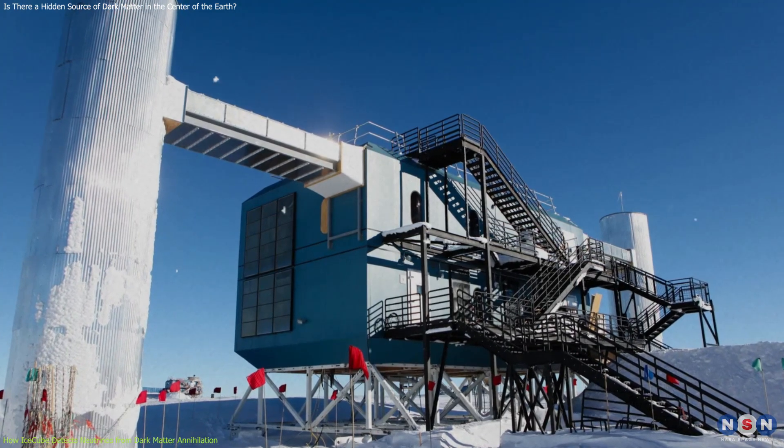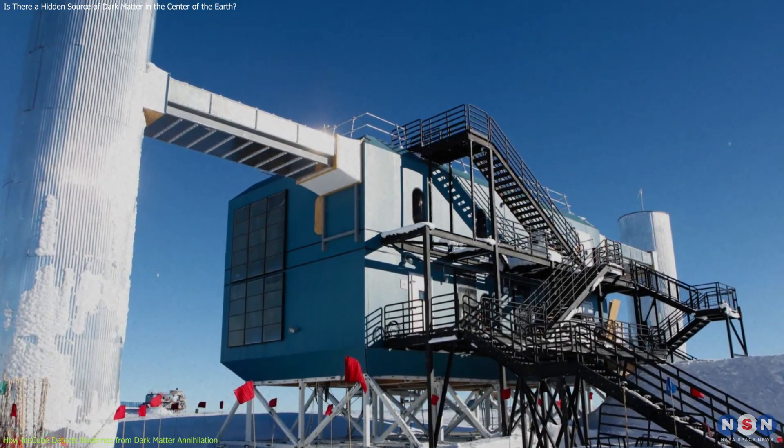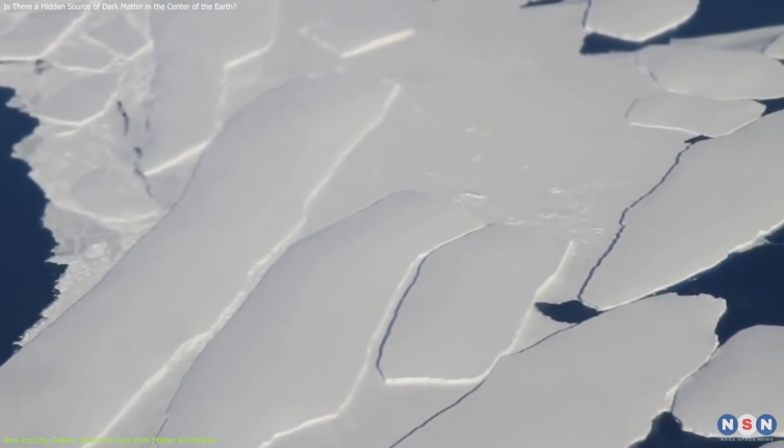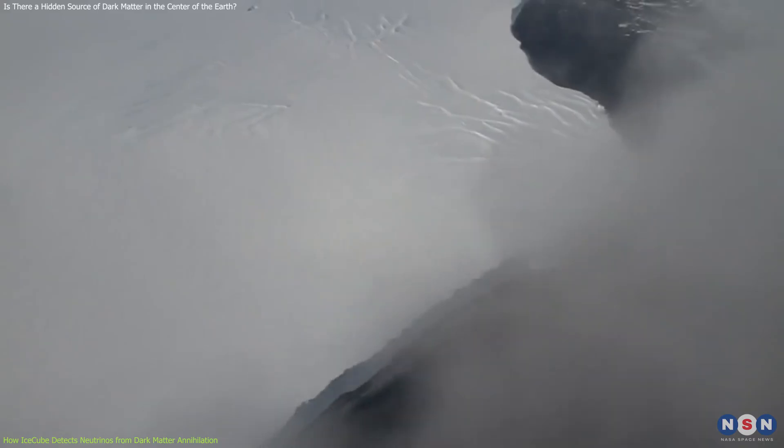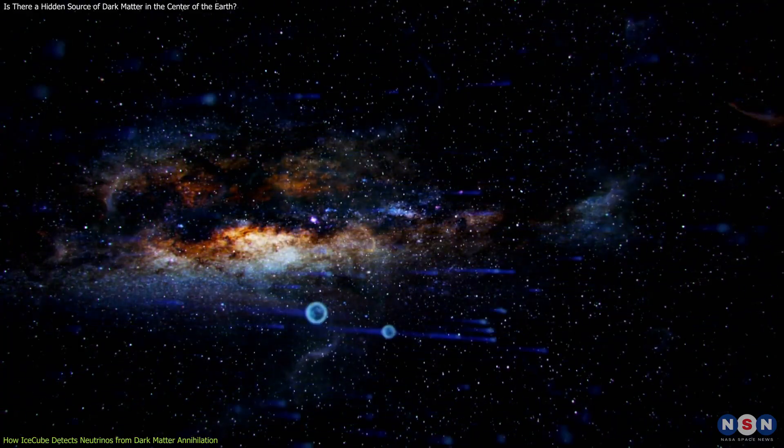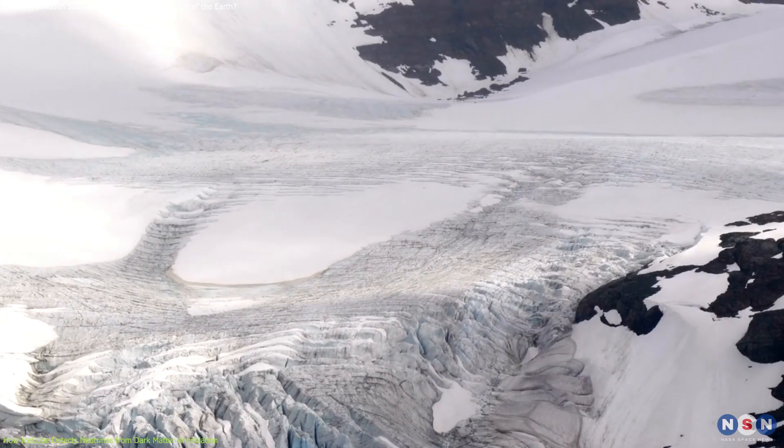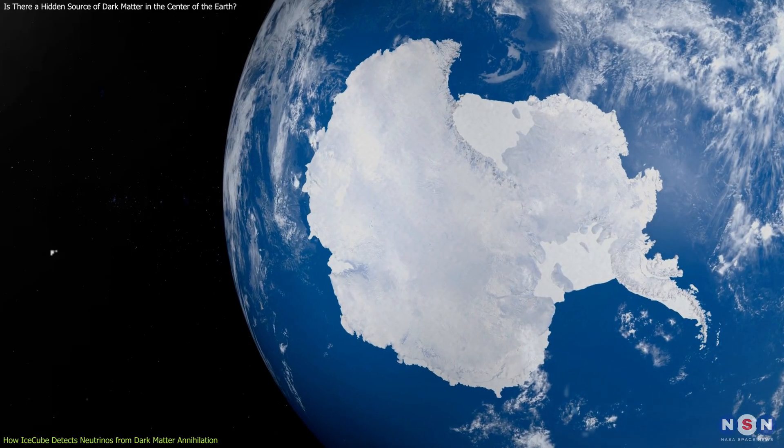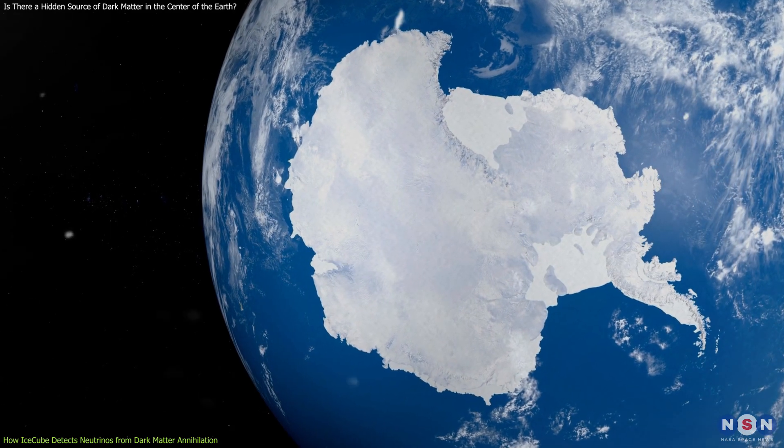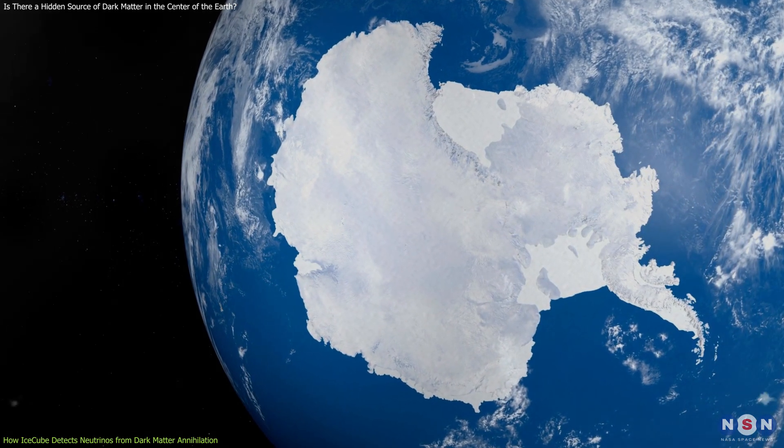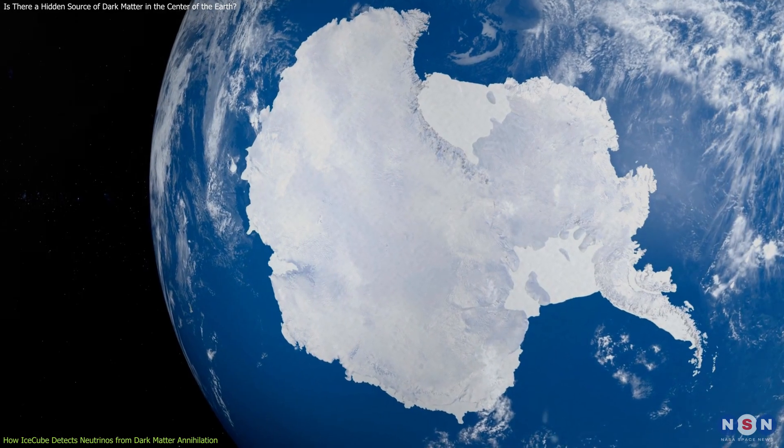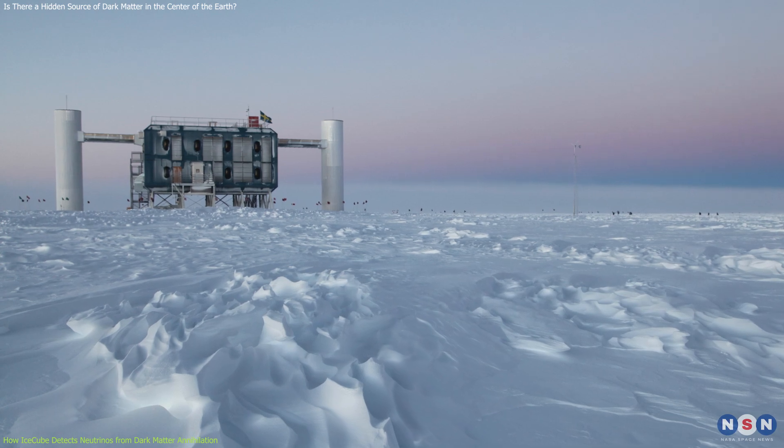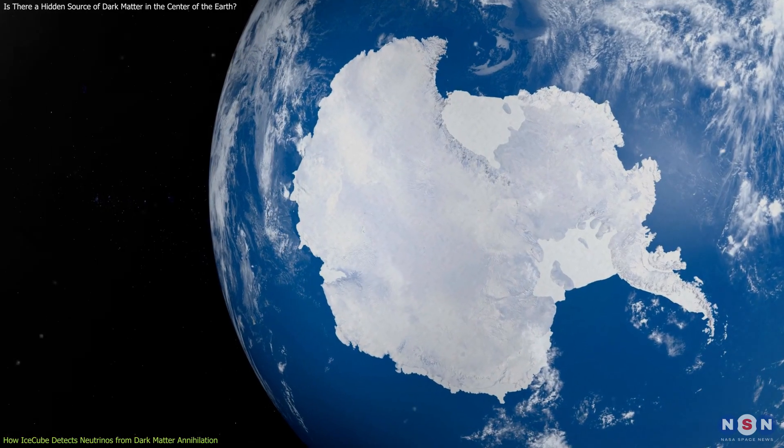You might be wondering, why did they build IceCube at the South Pole? Why not somewhere else? Well, there are several reasons for that. First of all, the South Pole has a very clear and stable ice layer that is ideal for detecting neutrinos. The ice is transparent and uniform, and it does not melt or crack easily. Second, the South Pole is very isolated and quiet, which means that there is very little interference or noise from other sources of light or radiation. Third, the South Pole is very convenient for detecting neutrinos from the center of the Earth, because it is exactly opposite to it.